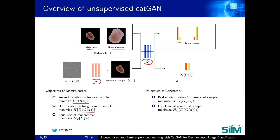As for the generator, its main goal is to confuse D to believe that the samples it generates are from the real world, so it needs to make D output a peaked distribution for the generative sample. This objective contradicts the one of D — these two form a virtual adversarial part of the network. In addition, we also want G to let D make equal use of the generative sample.